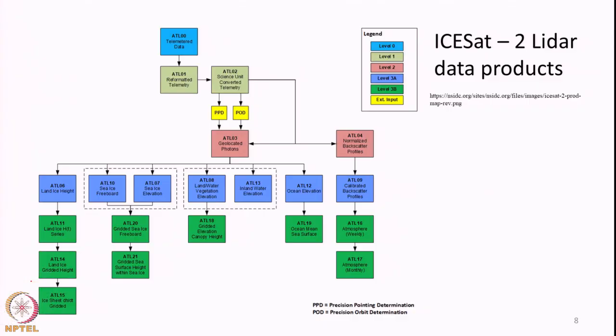Similarly, for the SMAP satellite, which is another L-band radiometer, level 1 data is brightness temperature, level 2 is soil moisture at swath level, level 3 is a global gridded daily soil moisture product, and level 4 can be a root zone soil moisture product or modeled soil moisture. Essentially, passive microwave radiometers provide data related to brightness temperature, soil moisture, wind velocity over oceans, and sea ice thickness.